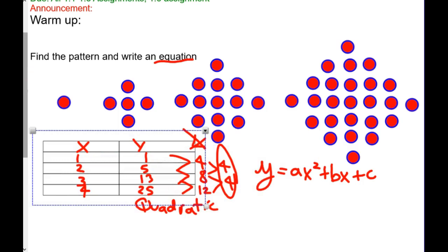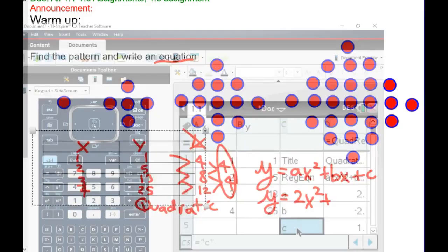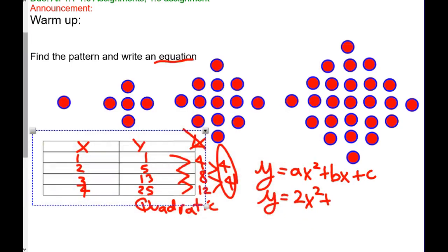So a is 2, y equals 2x squared plus, now our b is negative 2. Now let me actually back that up.